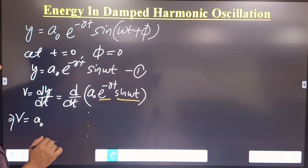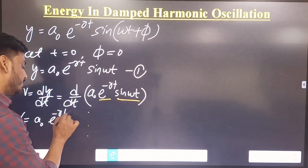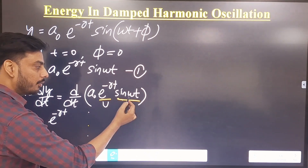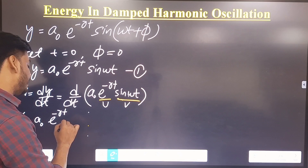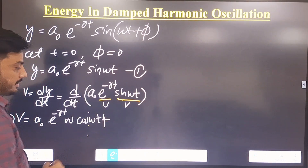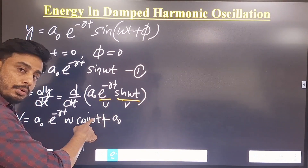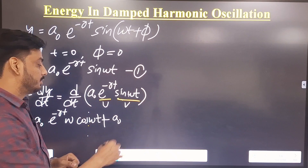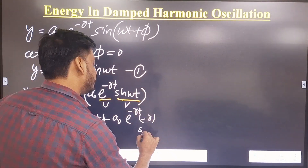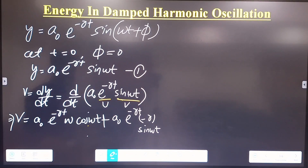Since a-naught is constant, it remains constant. Treating e to the power minus rt as u and sin(ωt) as v, using the product rule: keeping u constant, the derivative of v gives ω cos(ωt). Then plus, keeping v constant, the derivative of u gives minus r times e to the power minus rt. So sin(ωt) remains, giving us the derivative.